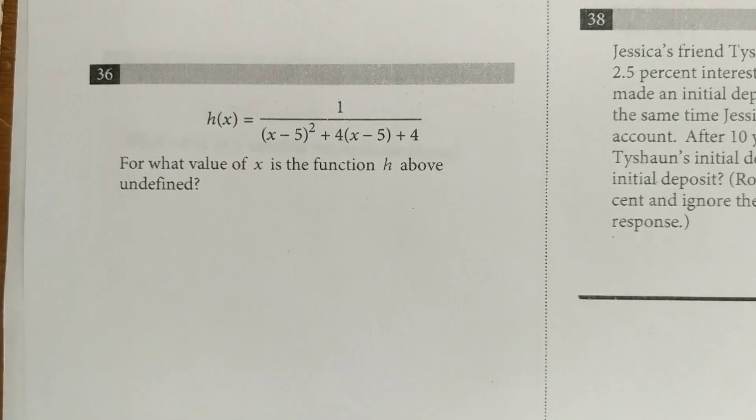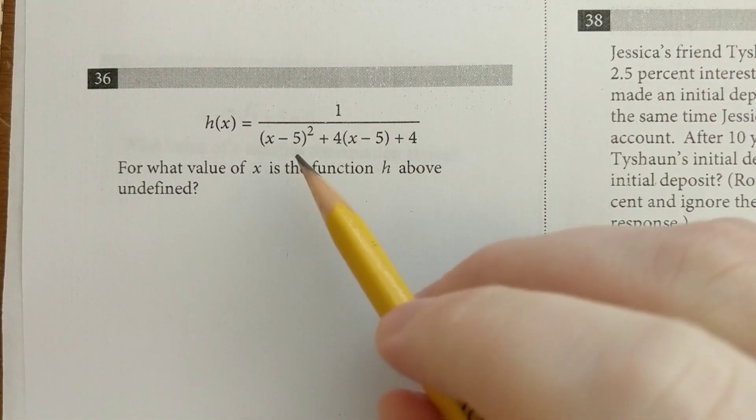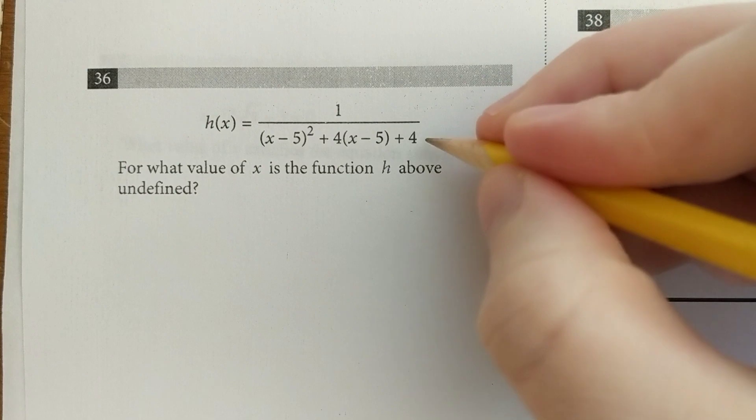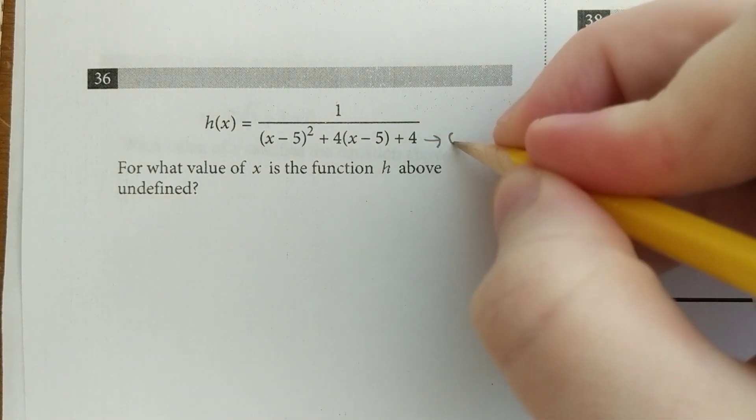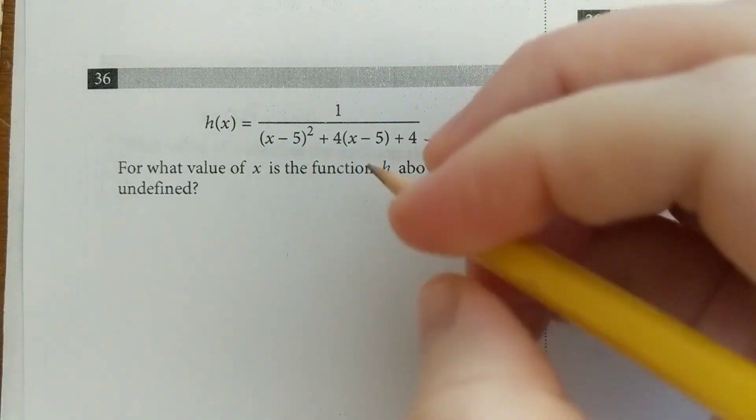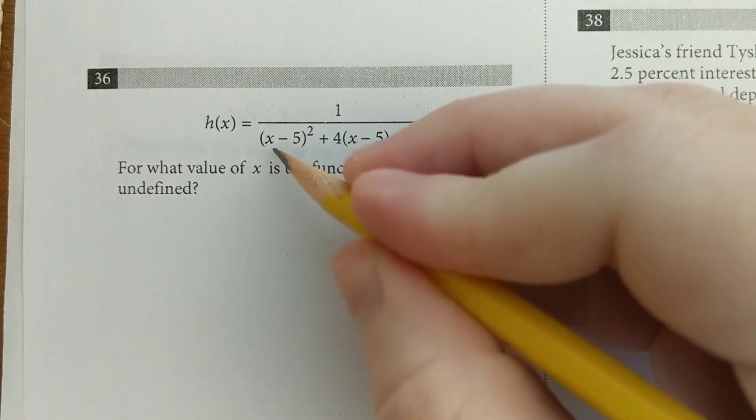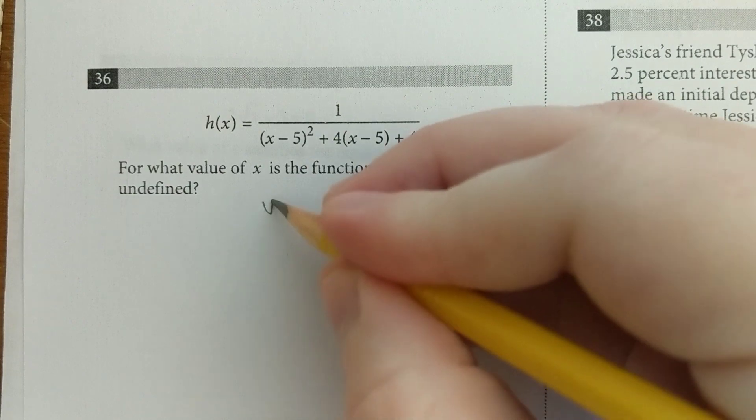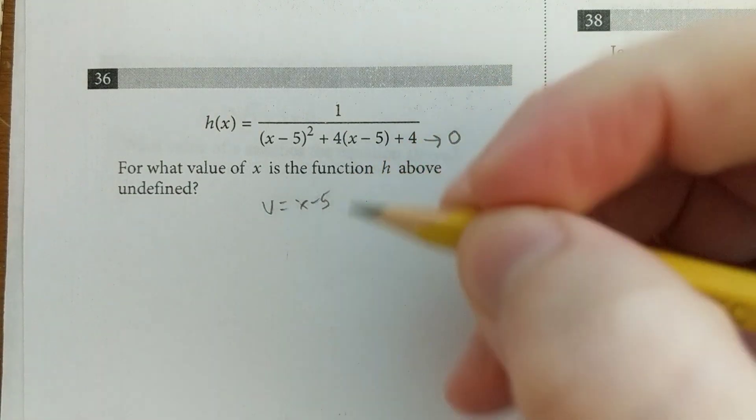Here's another example. They want to know what makes the function undefined. Well, the function is going to be undefined when this whole denominator equals 0. So we're going to set this equal to 0, but before we do that, I can see that the x minus 5 is repeating. So I'm going to say that u equals x minus 5.